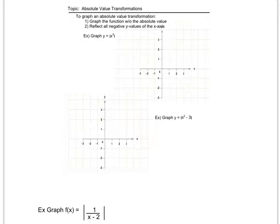So if I look at these three examples, the first one is to graph y equals the absolute value of x cubed. So I'm going to ignore the absolute value bars and I'm going to graph y equals x cubed.